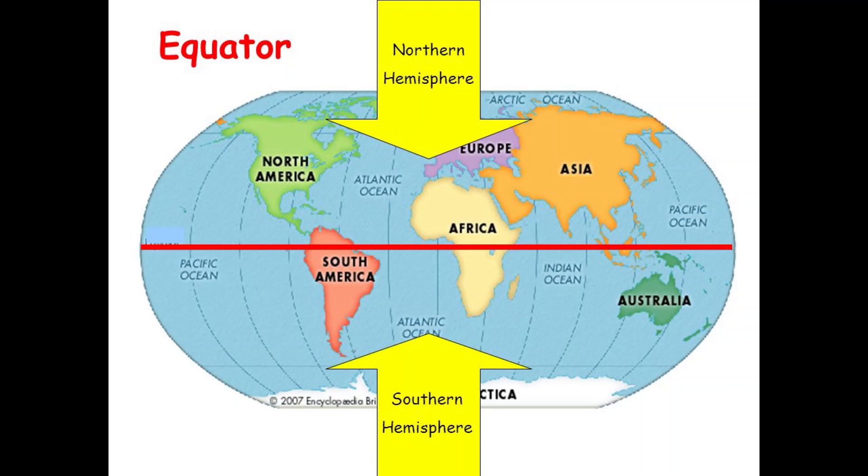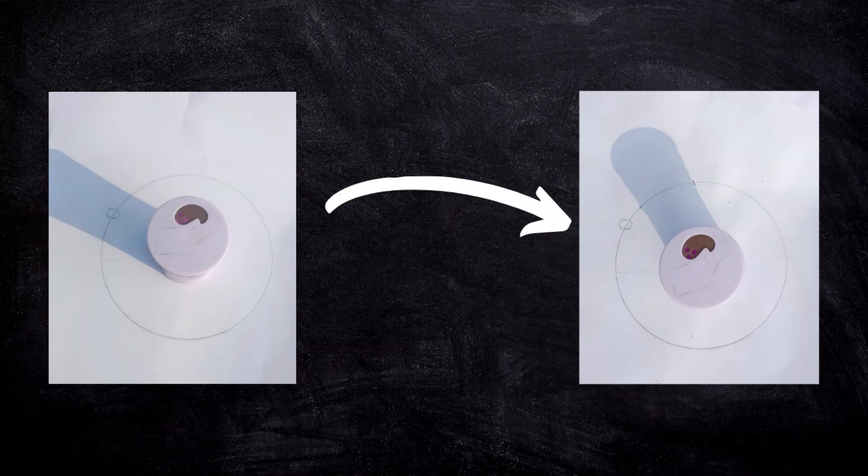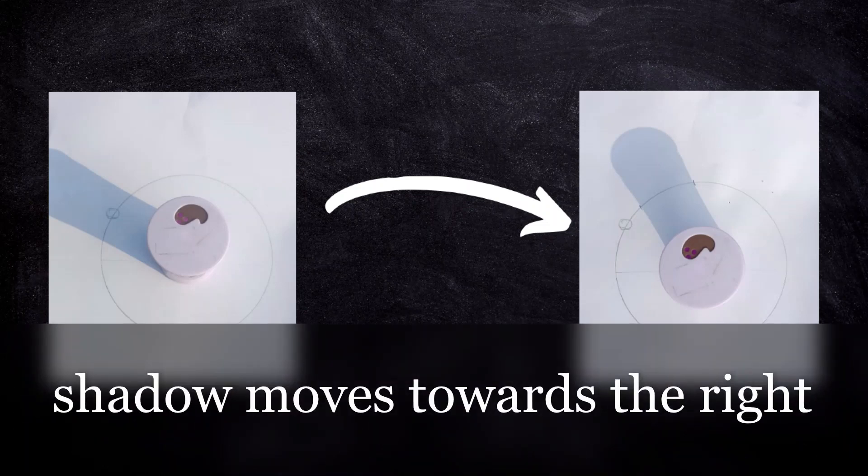My country is also in the northern hemisphere so I did a simple experiment. I placed an object on a piece of paper and monitored the shadow under the sun. You can see as the time passes the shadow moved towards the right.